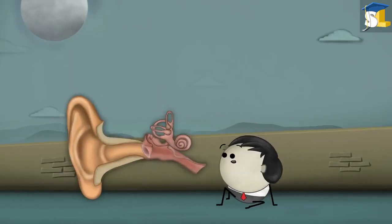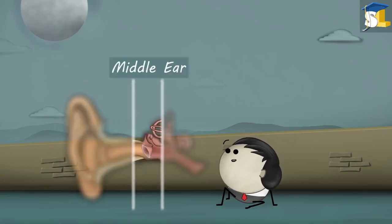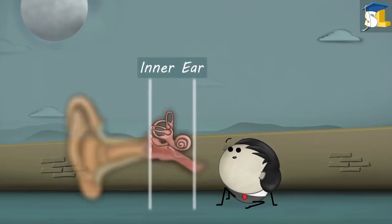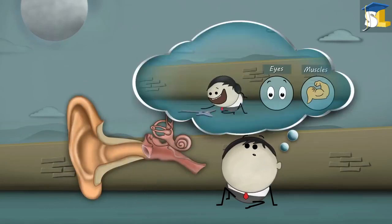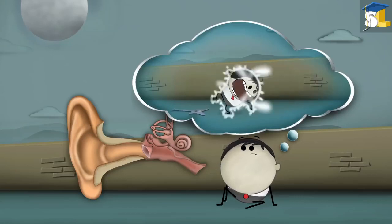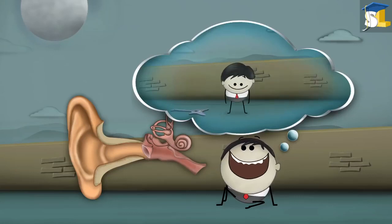Our ear consists of three parts: outer ear, middle ear, and inner ear. Our inner ear works in sync with our eyes and muscles, helping us maintain balance while we are doing various activities.